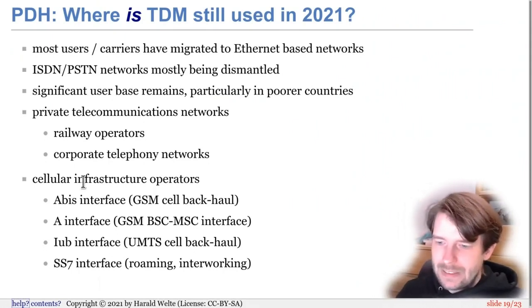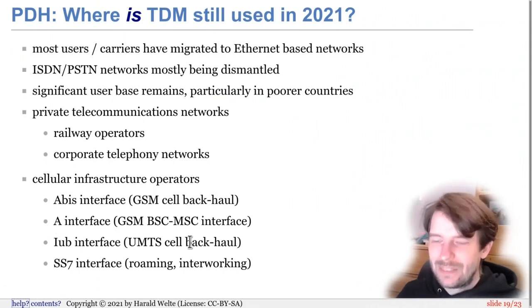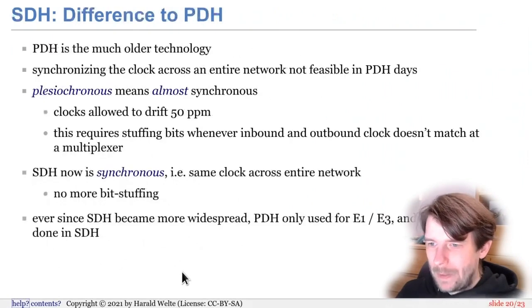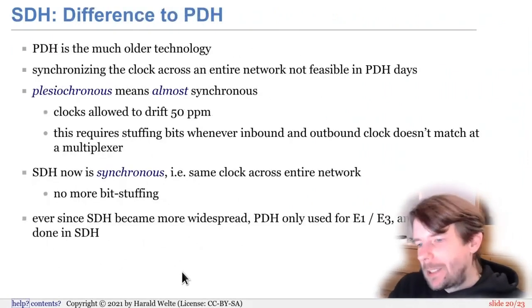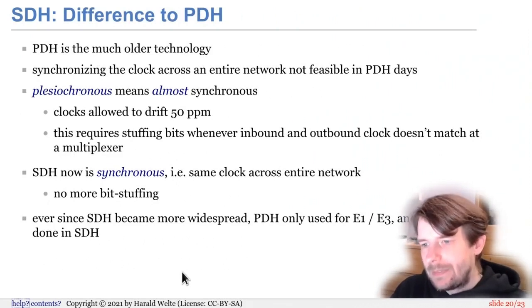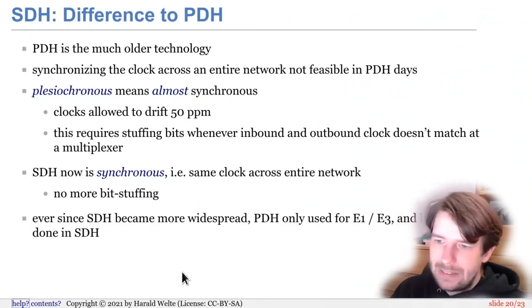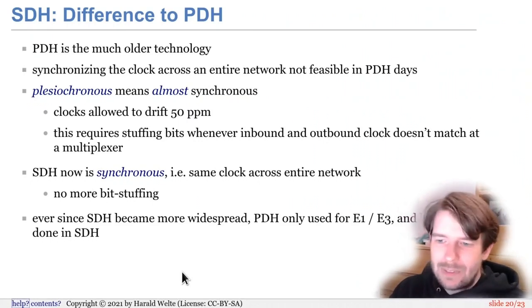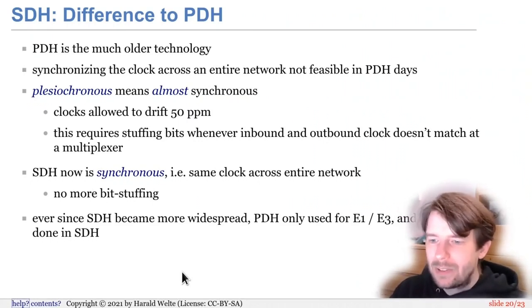Likewise on other interfaces — IuB is unlikely to be found anymore since 3G networks are being switched off in European countries, but you still see those occasionally. SDH is the more modern technology of the TDM principle. It was developed in the 1980s, and the main difference between PDH and SDH is already implied in the names: PDH has plesiochronous technology, SDH has synchronous.